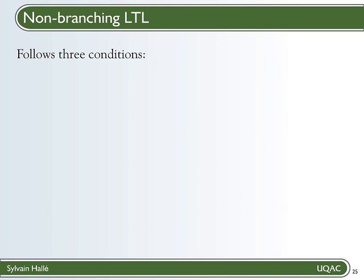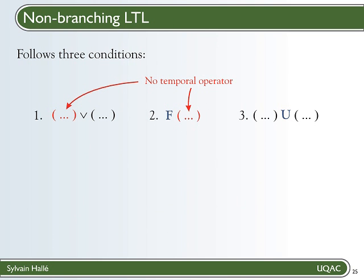There are only three restrictions we impose on an LTL formula to be part of the non-branching fragment. The first is that if you have a disjunction, then at least one side of the disjunction is free of any temporal operator, so you can only have Boolean connectives and atoms. The second restriction is that if you have an F operator, then inside you must not have any temporal operator. In other words, what's inside the F is again only Boolean connectives. And finally, when you have the until operator, then the left and the right side must be free of temporal operators.